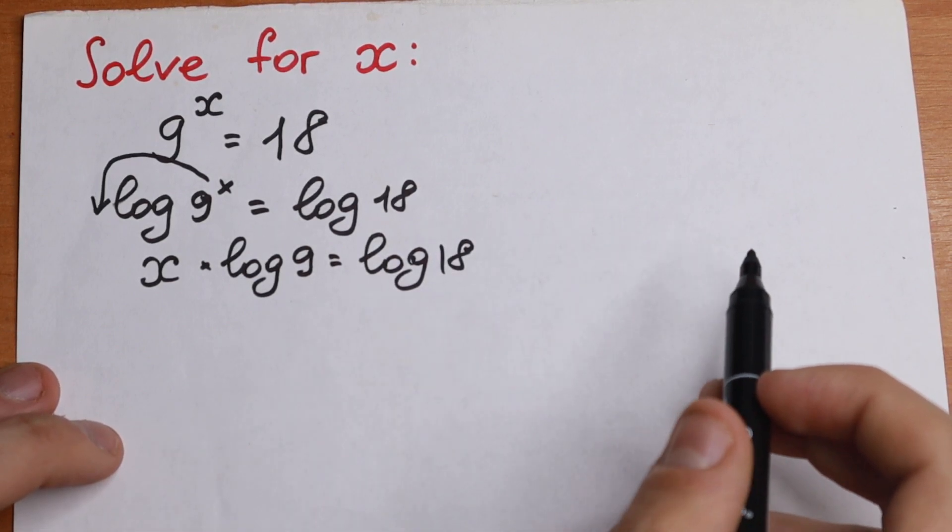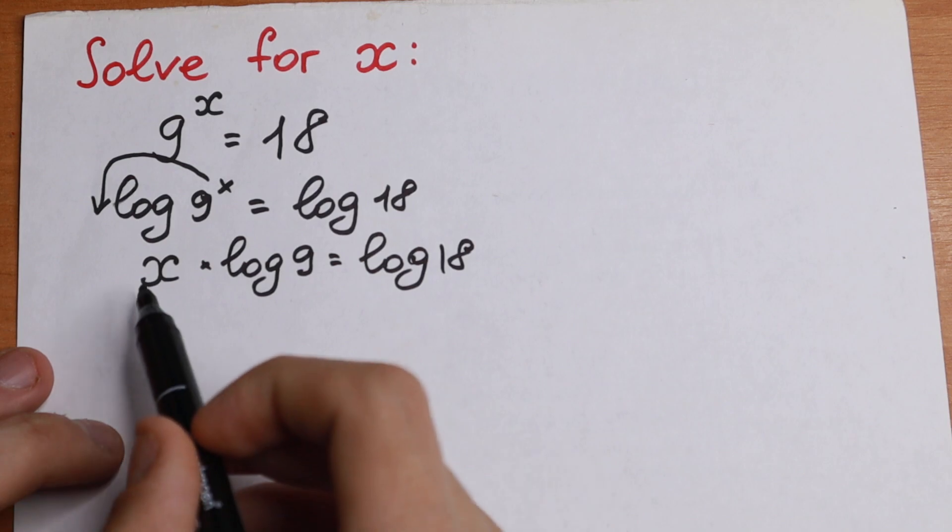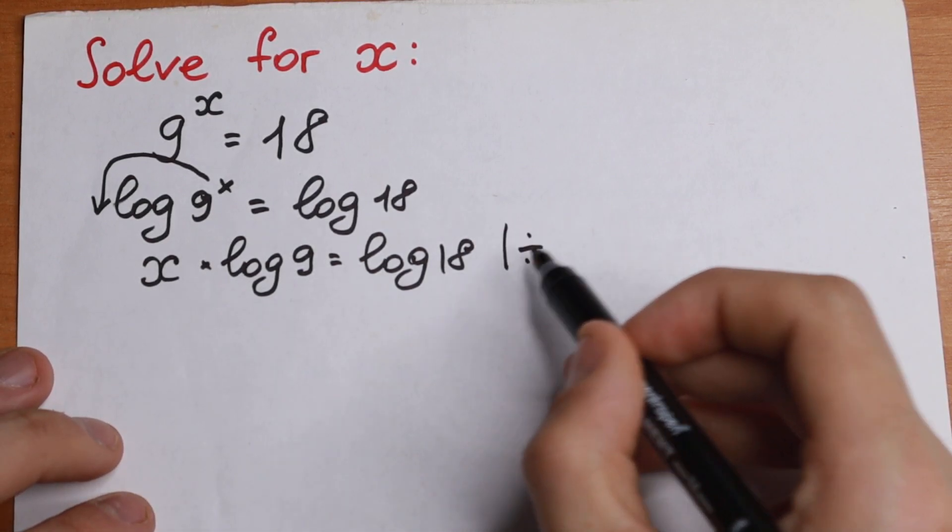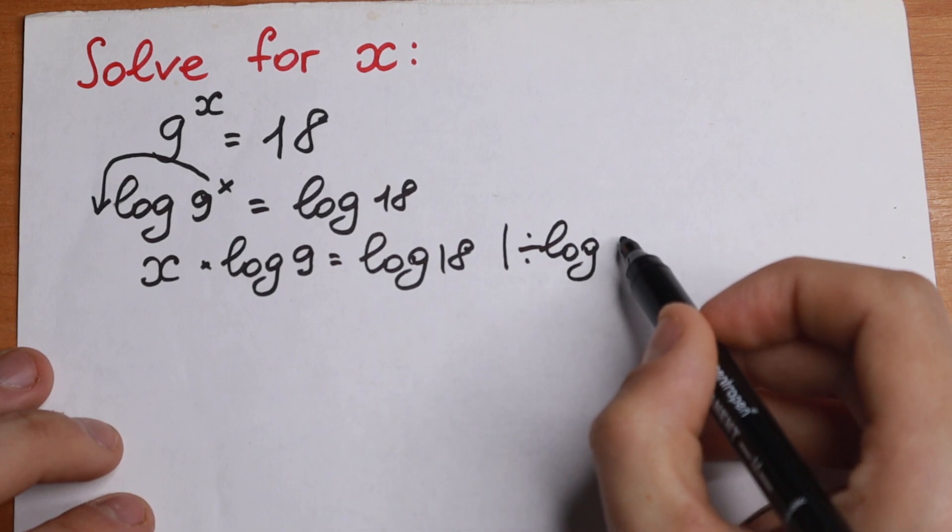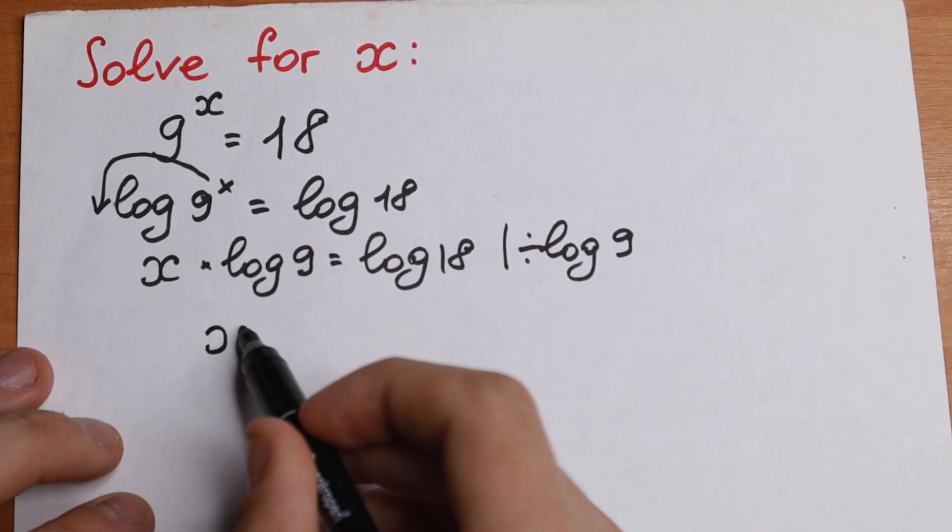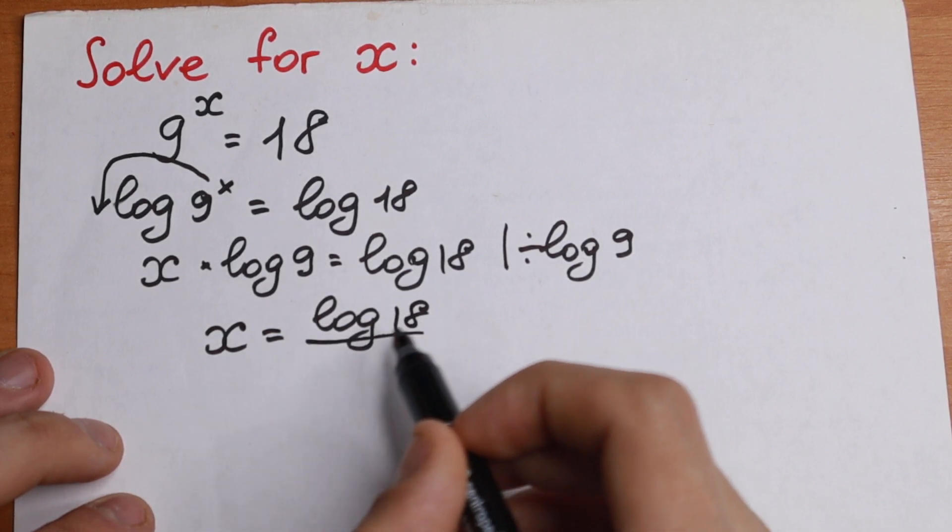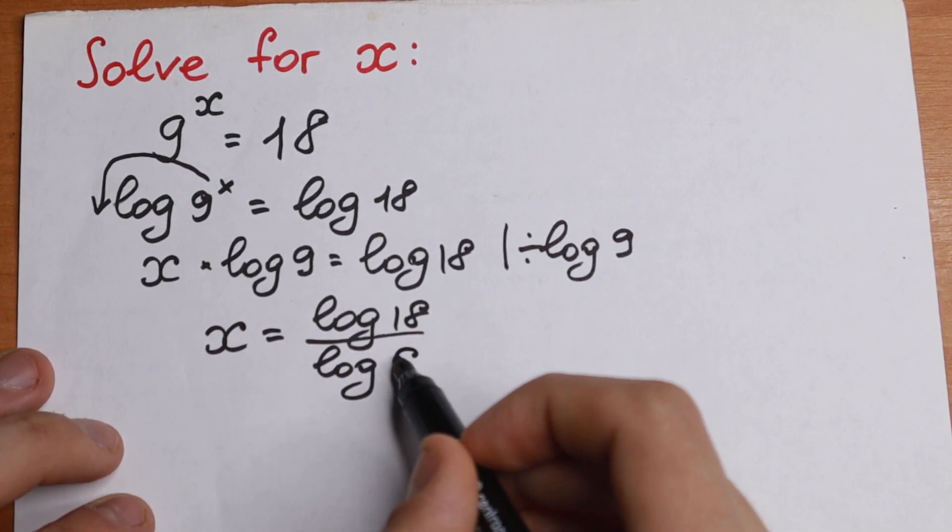And the last step, we have constant constant, so we need only our x, so we divide both sides by log 9. And if we divide it, right here we'll disappear, and we'll have x equal to log 18 over log 9.